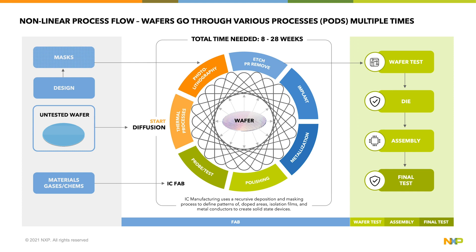Once out of the fab, the process becomes more linear with wafer test, die, assembly, and final test to create the final chip.